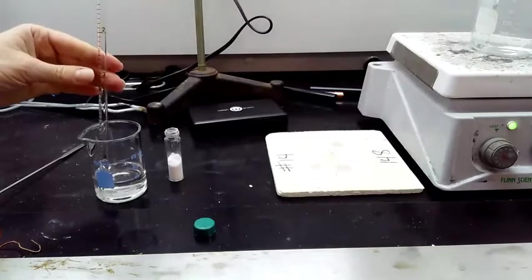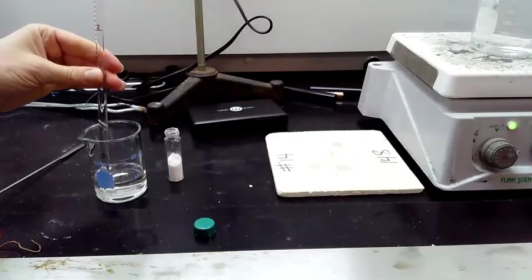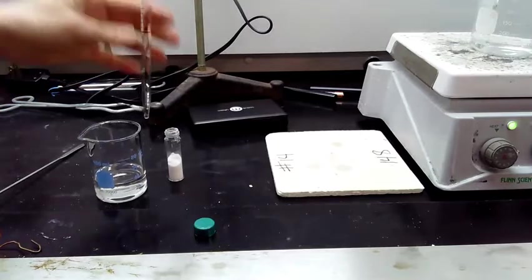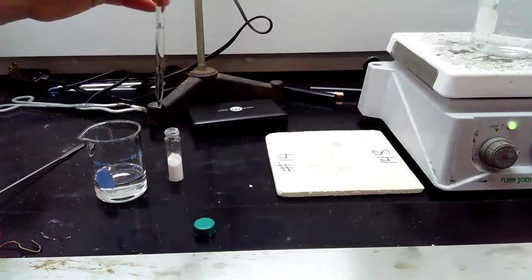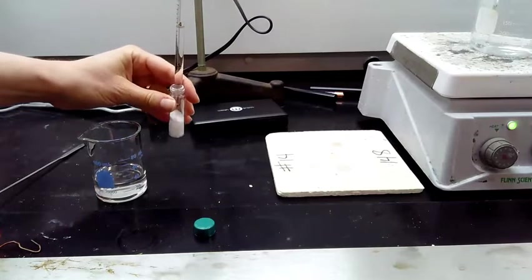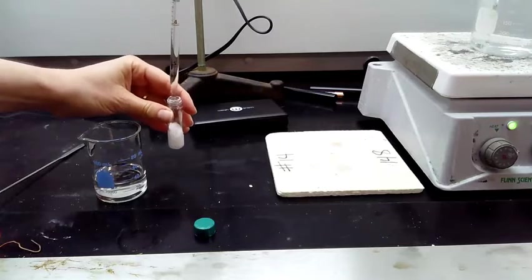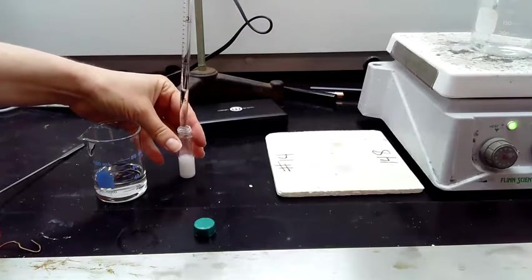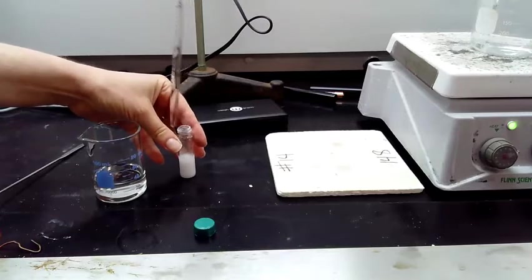Then I'm going to dispense to the five milliliter mark. You will not be able to see it very well in this video. I'm sucking it up to two and then dispensing it to five so that I know it's exactly three milliliters. I don't want to dispense through the end of the pipette because it may not be exactly one milliliter.